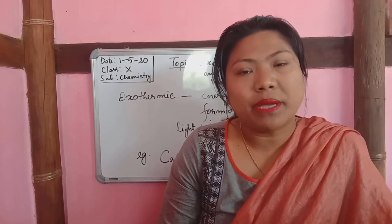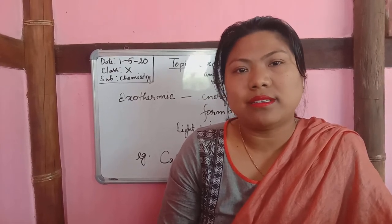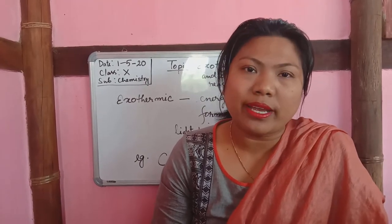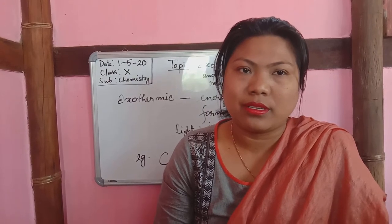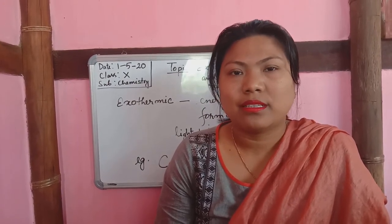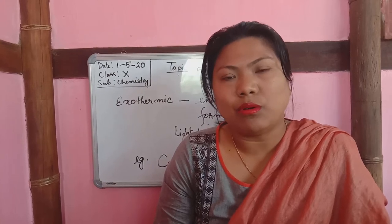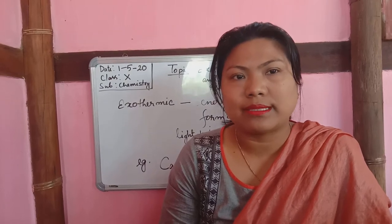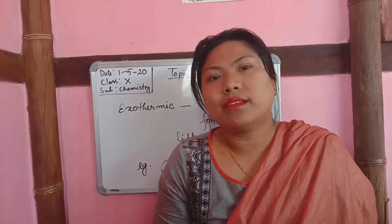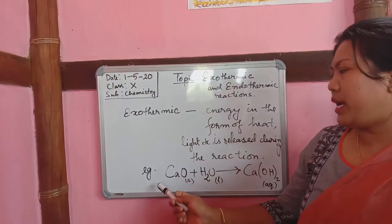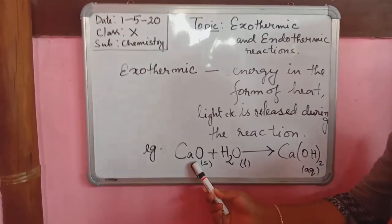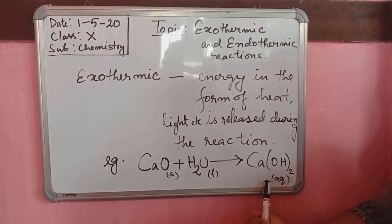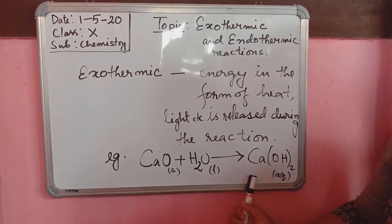Exothermic reactions liberate heat, light, or any form of energy during the reaction. Another example: when strong acids or bases are diluted with water, that is also an exothermic reaction — heat is liberated during the dilution. You can write the reaction of calcium oxide mixed with water to form calcium hydroxide as an example of an exothermic reaction.